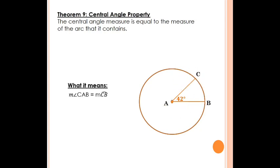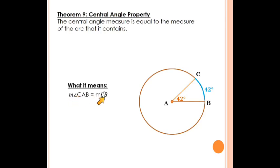What we're introducing here is the idea of the measure of an arc. We've always known that angles can have a measure in terms of degrees, but now an actual arc has a measure in terms of degrees. So what we would say here is, if this central angle is 42 degrees, this corresponding arc would have a measure of 42 degrees. In other words, the measure of angle CAB is equal to the measure of arc CB.